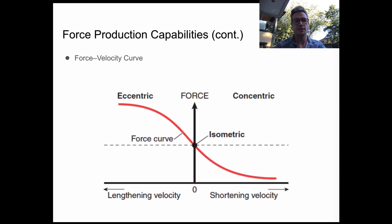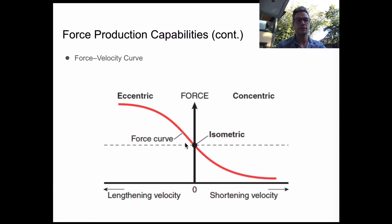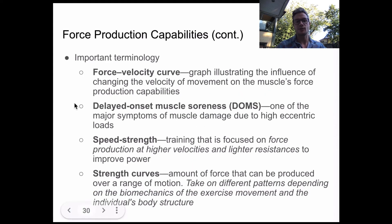Just to touch on DOMS with this chart: the reason it's thought that eccentric contractions are the primary contributor to delayed onset muscle soreness is because of this high force production we find in eccentric contractions, particularly when the muscles are at a more lengthened position. That speed and force, we believe, causes more tearing of the muscles, which therefore creates more DOMS — it's a bit of an inflammation process that causes muscle soreness.